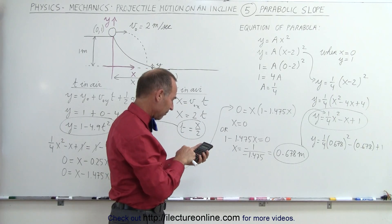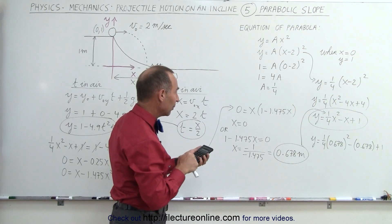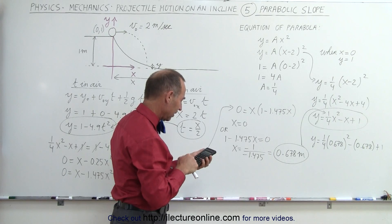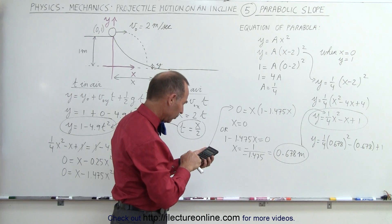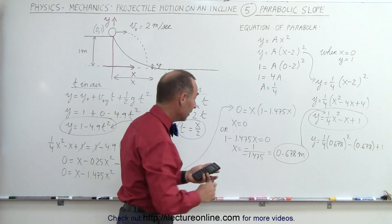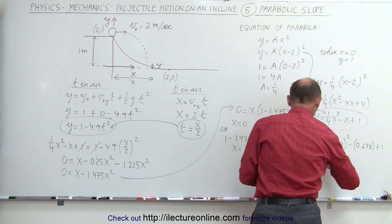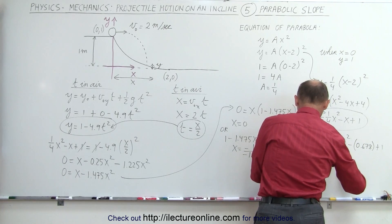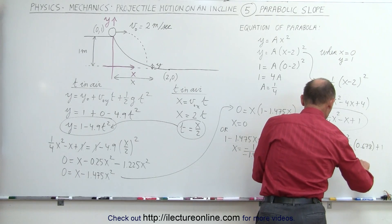And let's go ahead and find what that is equal to. So we square that amount, divide it by 4, and then we add 1 to that, and subtract from that minus 0.678. And for the y value, y equals 0.437 meters.